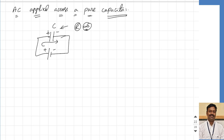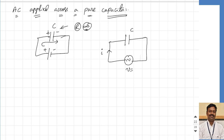But this is not the case when AC is applied across a capacitor. The capacitor will continuously go on charging and discharging because the polarities of the input are going on changing after every half cycle. I am taking a capacitor C and have applied a voltage equal to V maximum sine omega t.